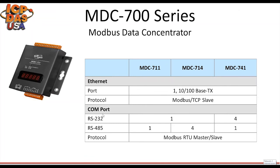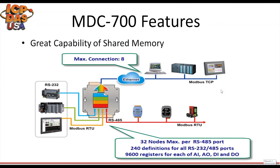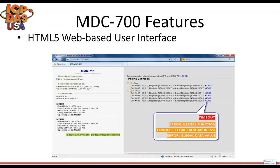We have MDC 711, 714, and 741, which have different numbers of RS-422 and RS-485 ports. The MDC 700 module can perform up to 240 Modbus RTU commands from Modbus slave devices through RS-422 or RS-485. Up to eight Modbus TCP masters are allowed to get the pooled data through the Ethernet. The internal shared memory has four tables to store AI, AO, DI, and DO data, and each table can store up to 9600 registers.